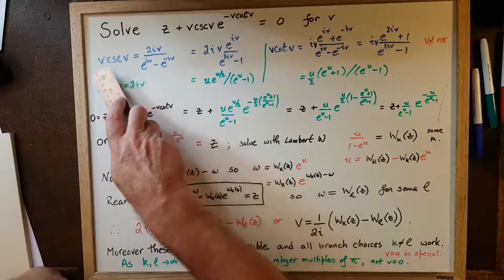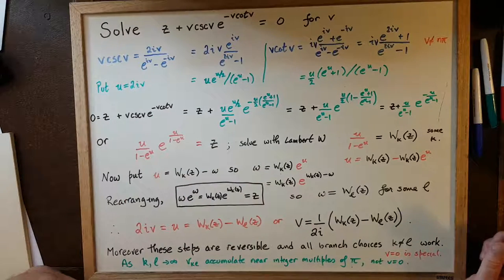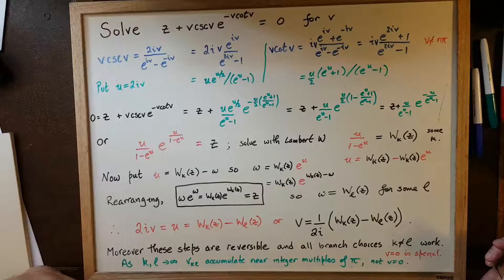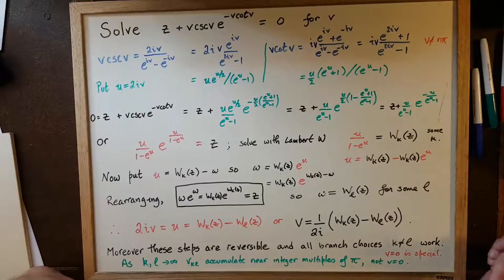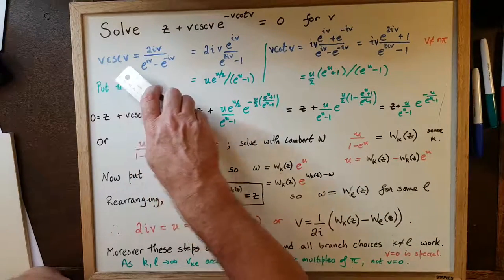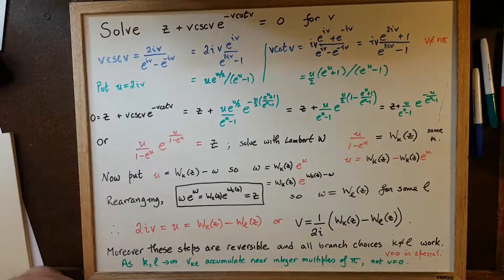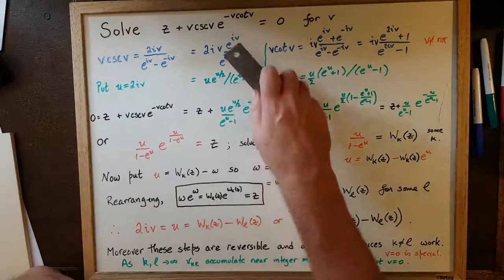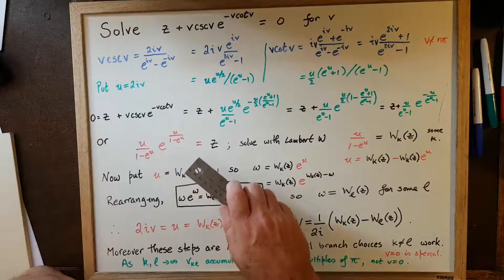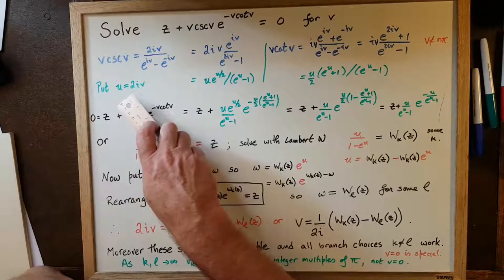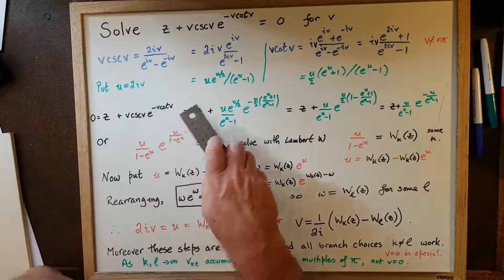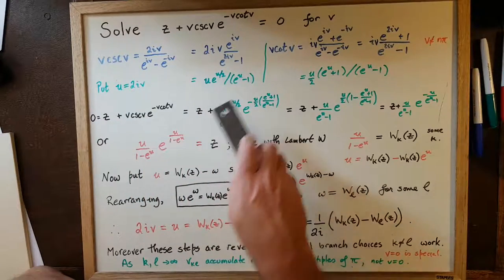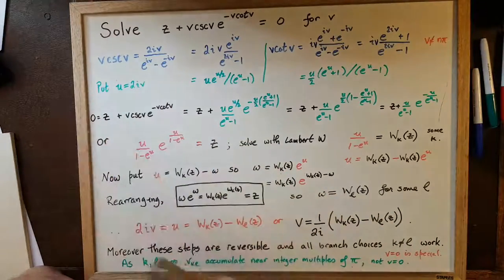We first use the complex definition of the trigonometric functions. Cosecant v is 1 over sine v, and sine v is e to the iv minus e to the minus iv, divided by 2i. So this gives an expression for v cosecant v in terms of complex exponentials. We rearrange by multiplying top and bottom by e to the iv, getting e to the iv over e to the 2iv minus 1. Putting u equal to 2iv, we get u times e to the u over 2, divided by e to the u minus 1, which equals v cosecant v.